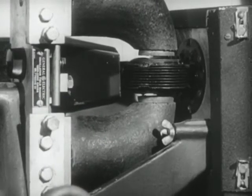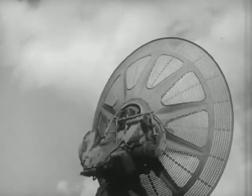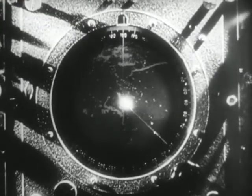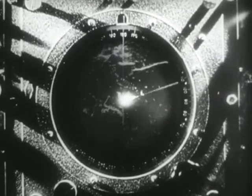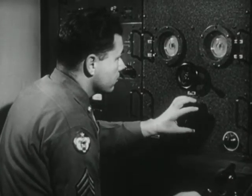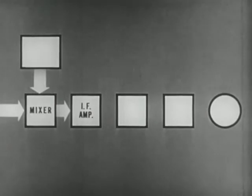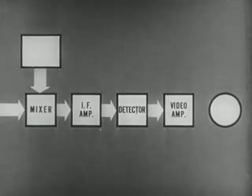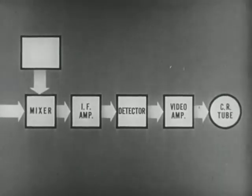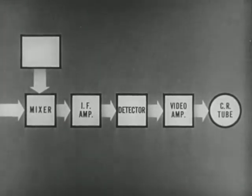We have seen how the pulse to be transmitted is generated. Now we will examine the second function of the radar set. The transmitted pulse must also be received and displayed. However, the signal which appears on the cathode ray tube must be at a video frequency, which is much lower than the transmitted pulse. To produce this video frequency is one of the main functions of the radar receiver. This receiver uses the superheterodyne principle: by mixing the incoming signal with a local signal in a crystal or tube mixer, an intermediate frequency is produced. The intermediate frequency component is amplified in the video amplifier and displayed on the cathode ray tube. The generation of the local signal is the function of the local oscillator.